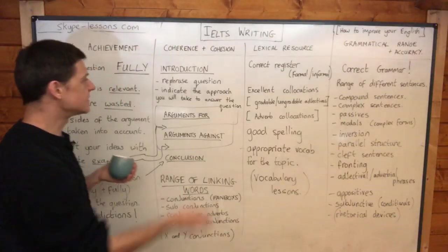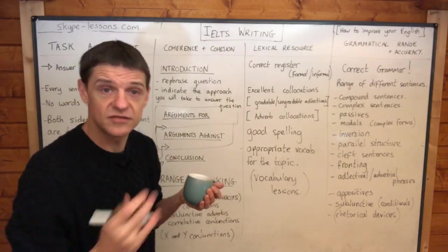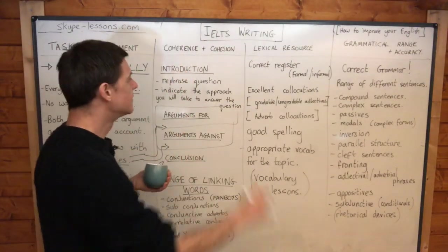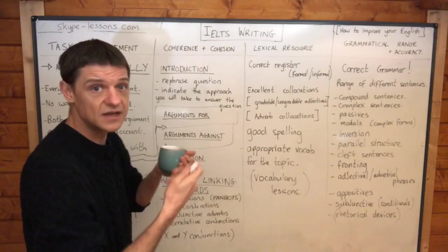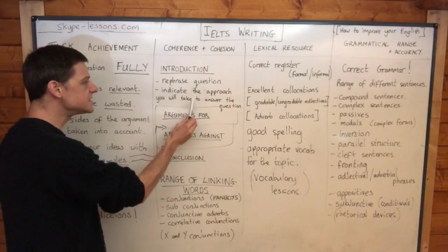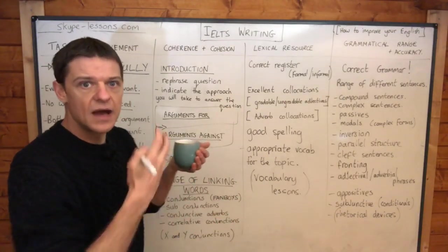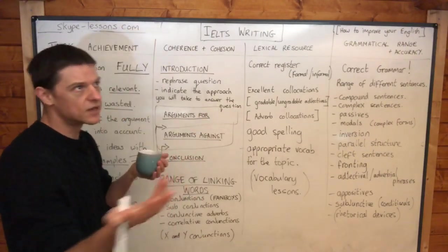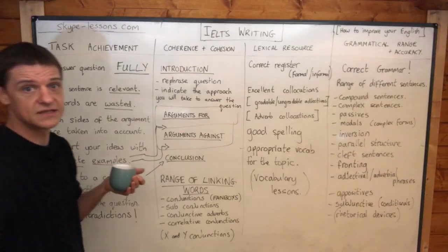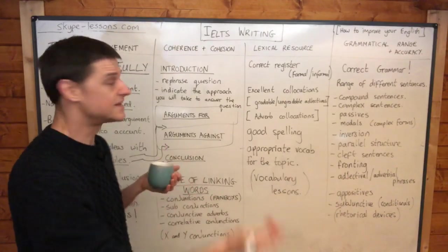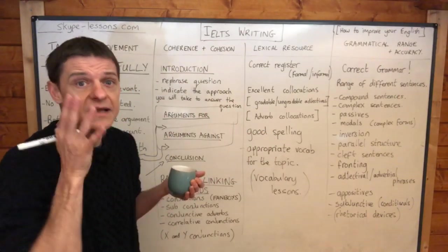Coherence and Cohesion. This is really the idea that for a formal discursive essay — not a letter to a friend — you want a clear structure. For the introduction: rephrase the question in your own words and indicate the approach you will take. State from what position you're going to argue and how the essay is going to be structured. If you're writing about taxes, state that the essay will firstly consider arguments in favour of reducing taxes and then arguments against. The reader needs to know where they're going. The introduction shouldn't be more than two or three sentences.